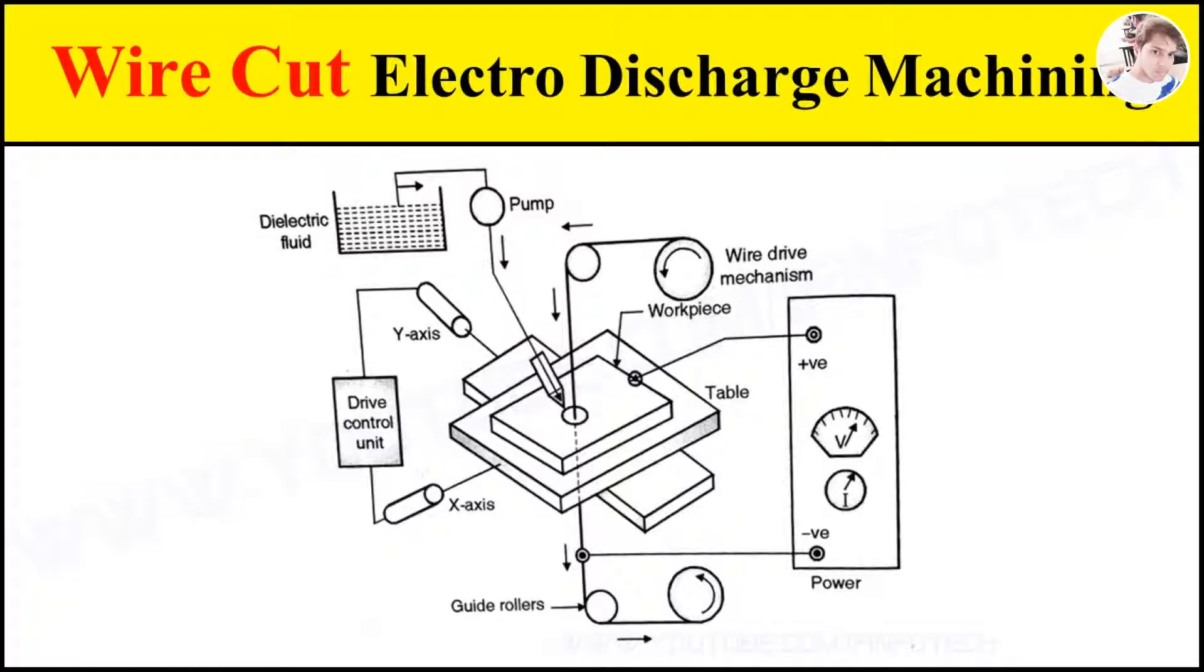In today's topic we are going to see the working of wire cut electro discharge machining process. The major components are power supply, wire draw mechanism, table draw control unit, and dielectric fluid supply. First is the power supply.